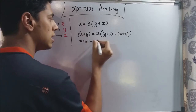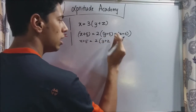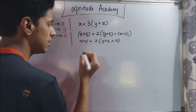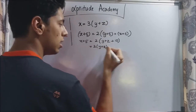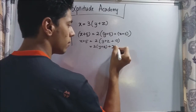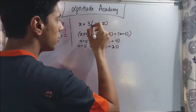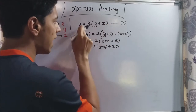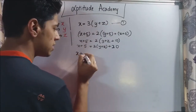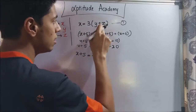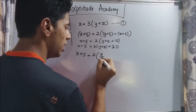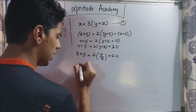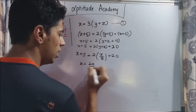So x plus five is equal to two times (y plus five + z plus five), which gives two times (y plus z) plus ten. They've asked you to find the father's age, which is x. You can split this as two times (y plus z) plus twenty equals x plus five. From the first equation, x equals three times (y plus z), so y plus z equals x by three. Substituting: x plus five equals two times (x by three) plus twenty.